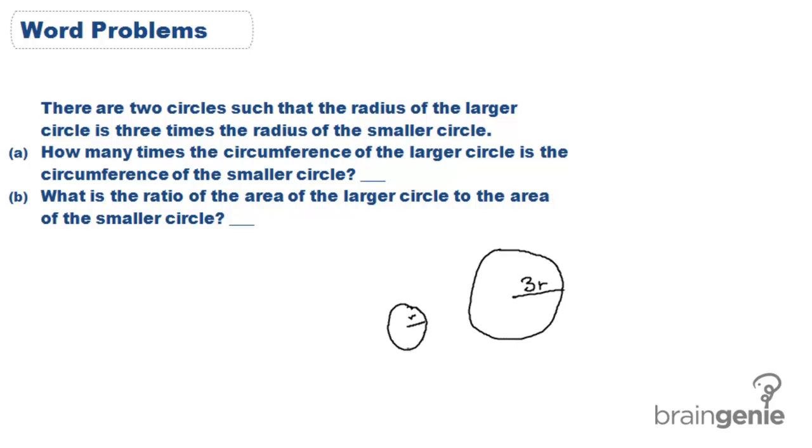We can also solve word problems. This says there are two circles such that the radius of the larger circle is three times the radius of the smaller circle.